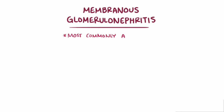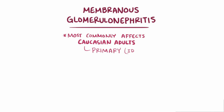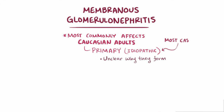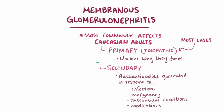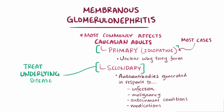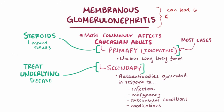Membranous glomerulonephritis most commonly affects Caucasian adults, and it can be primary or idiopathic, meaning it's not quite clear why these complexes form, and this accounts for the vast majority of cases. The rest of the cases are secondary, and seem to arise from autoantibodies generated in response to another process, like an infection or malignancies, autoimmune conditions, or medications. If it is secondary to some other disease, then treatment starts by treating the underlying disease. If it's primary or idiopathic, then steroids are sometimes used, but they've been shown to have mixed results. If it goes untreated or treatment is not successful, then membranous glomerulonephritis can progress to chronic renal failure.